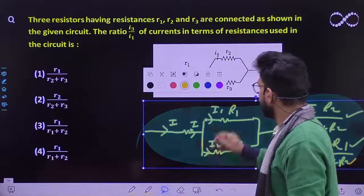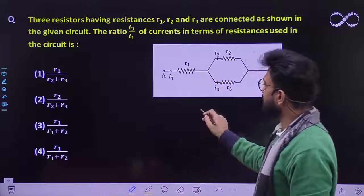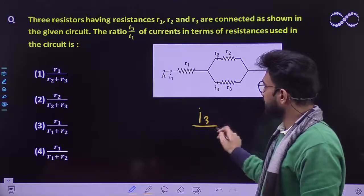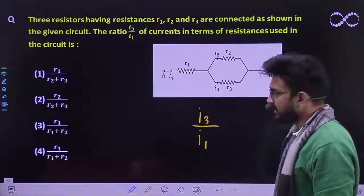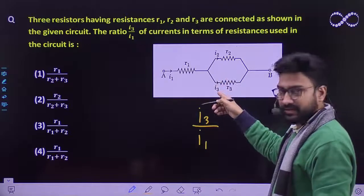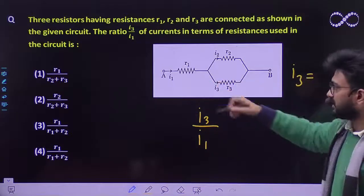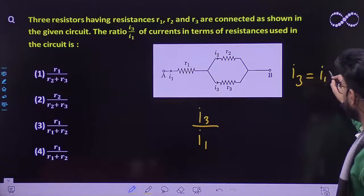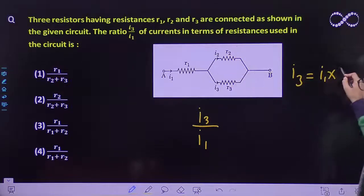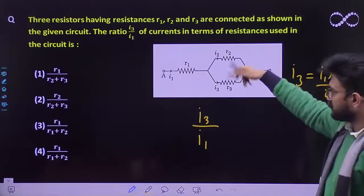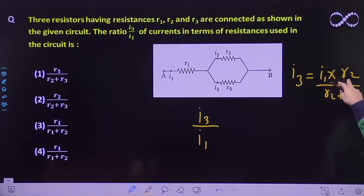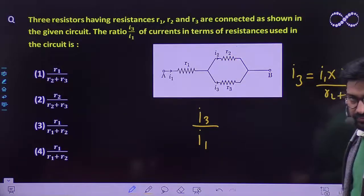Now we need to find out the ratio of I3 by I1. I3 is the current flowing here. We know that I3 must be equal to the current coming, which is I1, multiplied by R2 divided by R2 plus R3. Because the summation of these two would be here and this resistor would be R2.